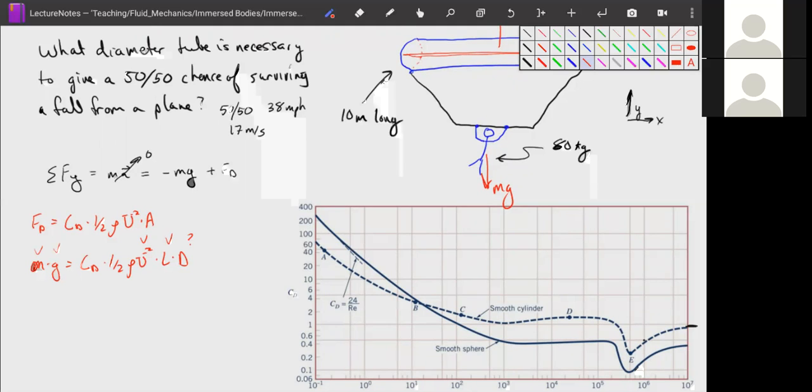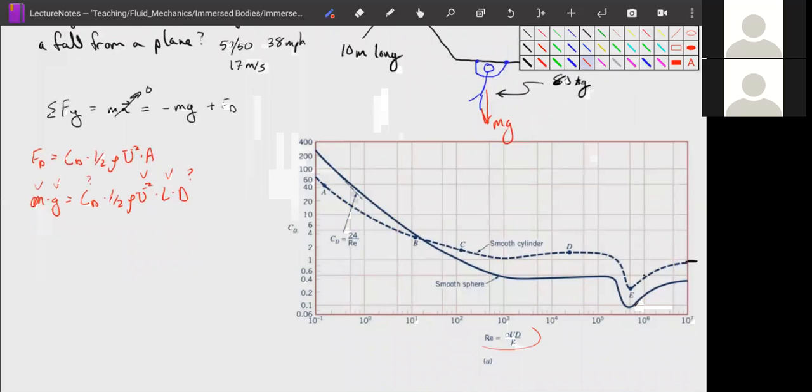We also do not know our drag coefficient. And unfortunately, our drag coefficient is dependent upon our Reynolds number, and our Reynolds number is dependent upon our diameter. So we've done this before. We've run into this problem. We have to do an iterative solution to this problem, which is basically guess and check.